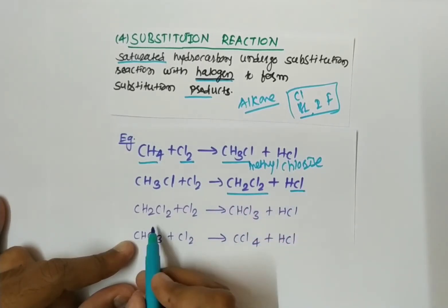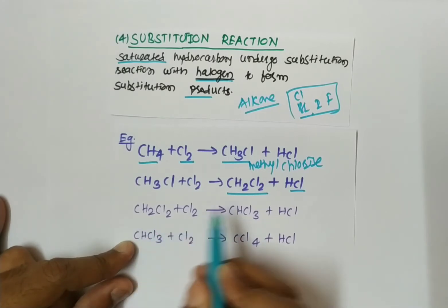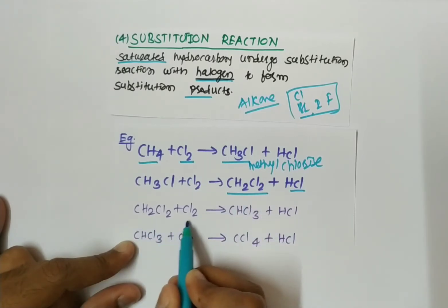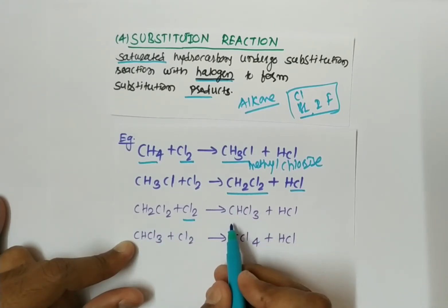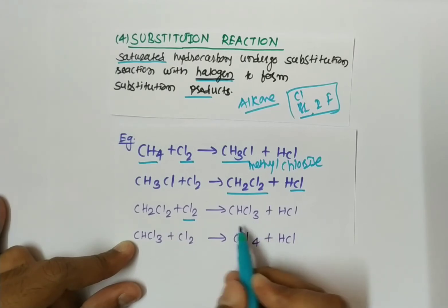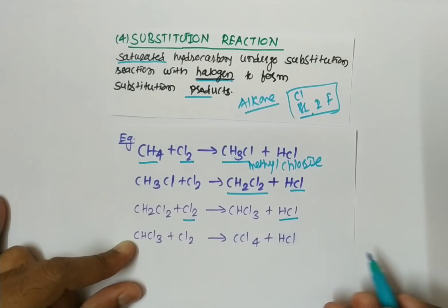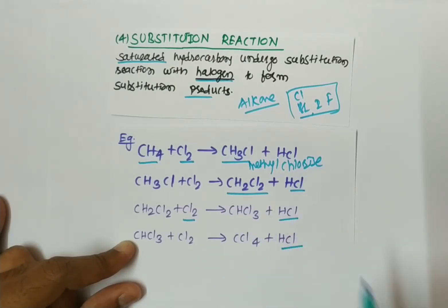Another reaction: CH2Cl2 reacts with Cl2 again to form CHCl3. In each step HCl is formed as a byproduct. So in each successive reaction, one hydrogen is substituted by a chlorine.